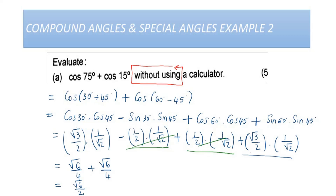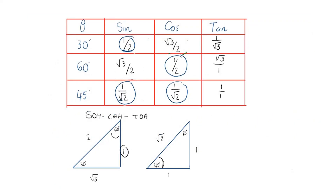So we have evaluated cosine of 75° plus cosine of 15° without using a calculator. We first rewrote cosine of 75° as cosine(30° + 45°) and cosine of 15° as cosine(60° − 45°), expanded the compound angle identities, added like terms, and arrived at the final answer of √6/2.